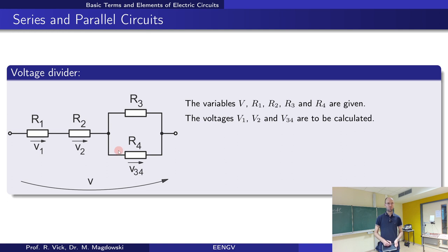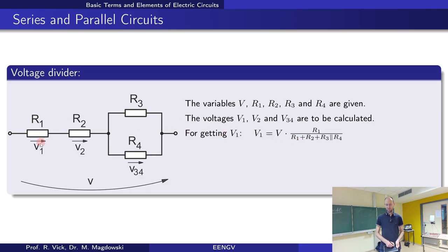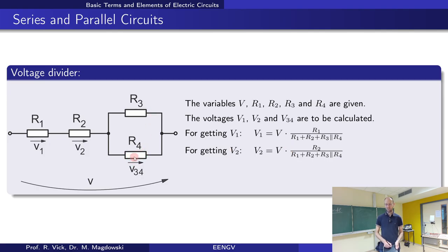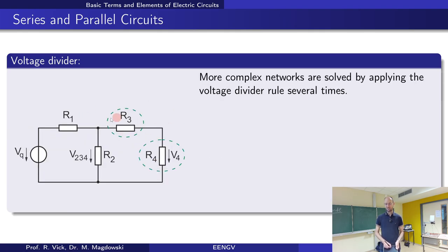We can apply this to more complicated circuits. For example, with one resistor, a second resistor, and then two resistors in parallel: the partial voltage across the first resistor is R1 divided by the total resistance times the total voltage; for the second, R2 divided by total resistance; and for the parallel combination, we use the equivalent parallel resistance of R3 and R4 divided by the total resistance times the total voltage.